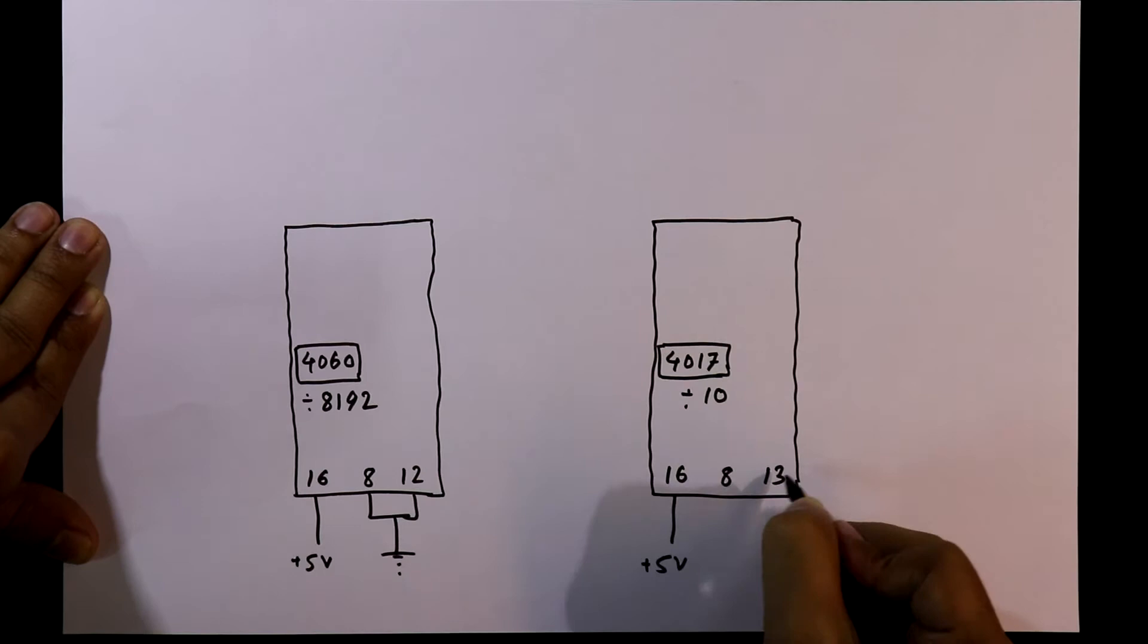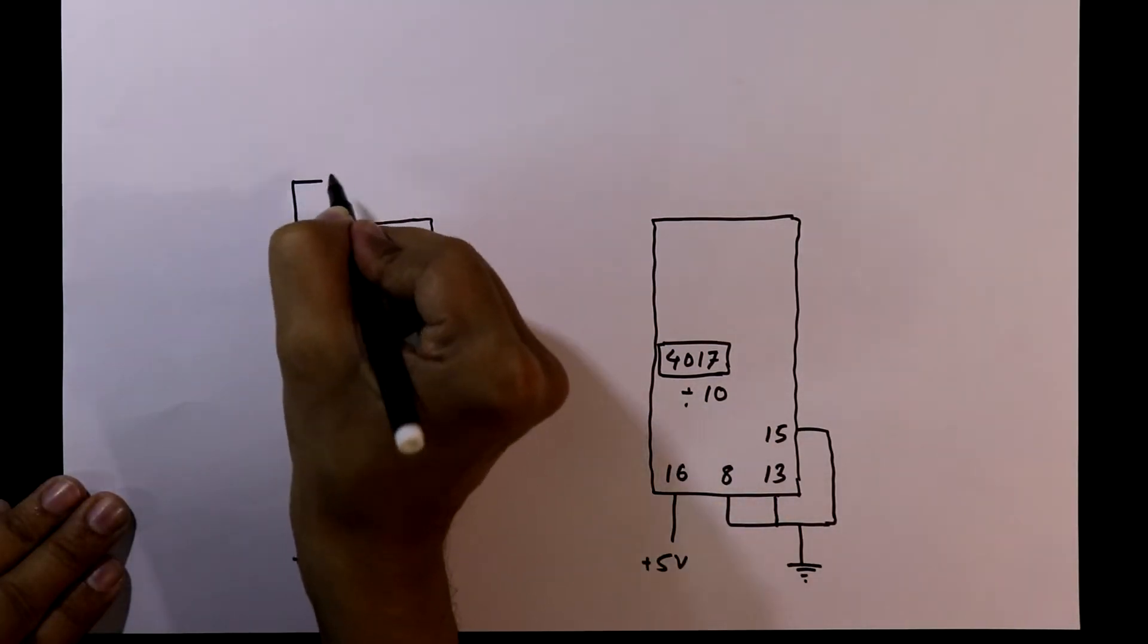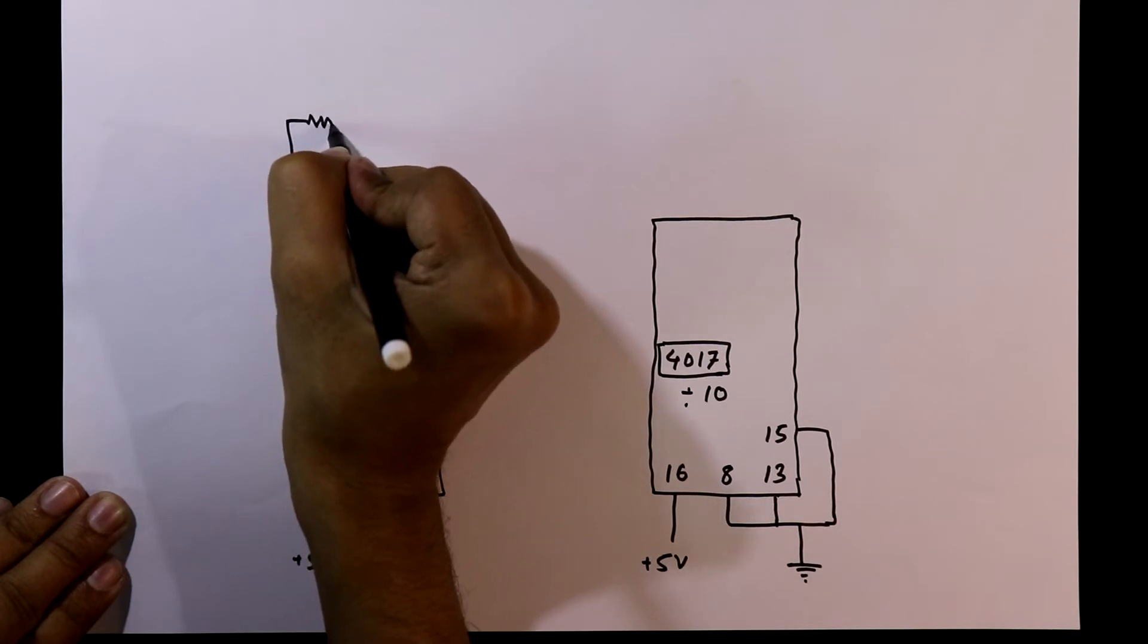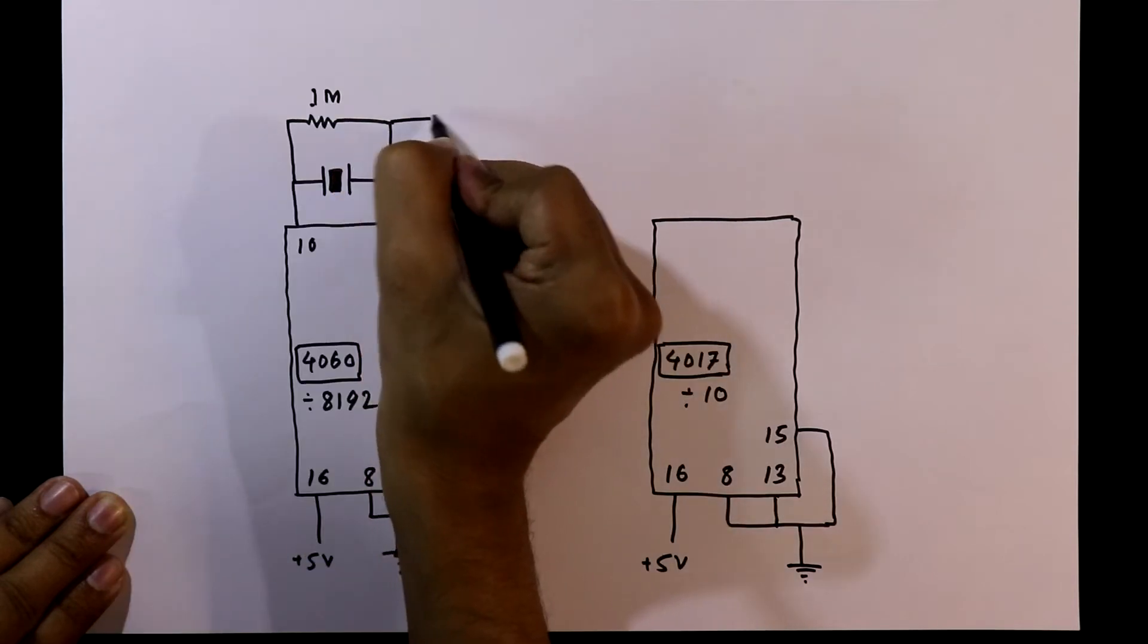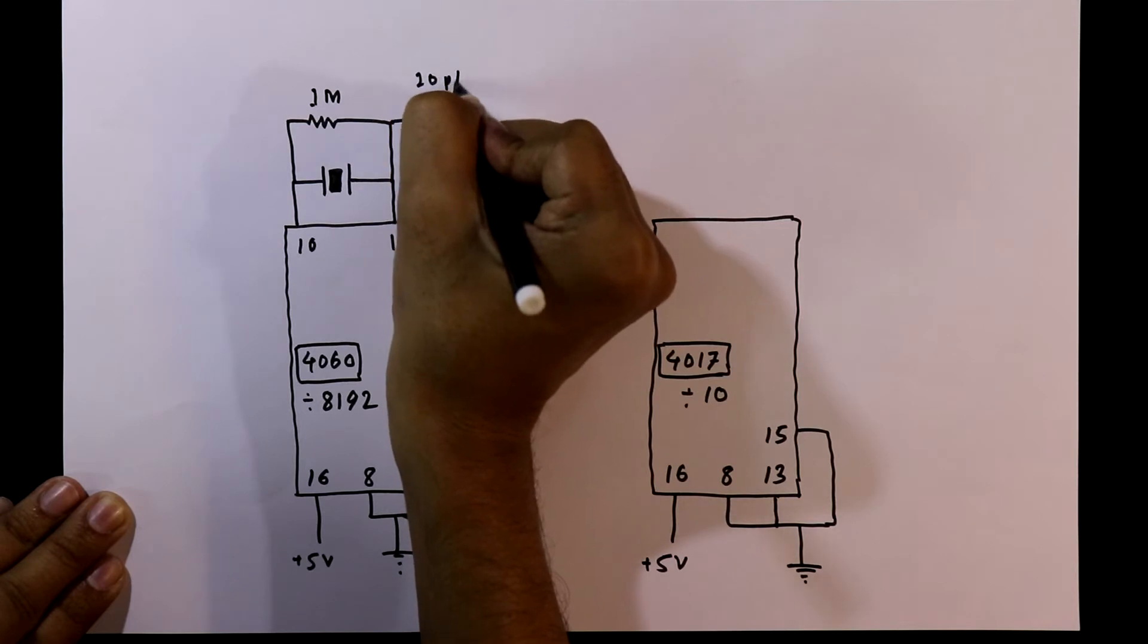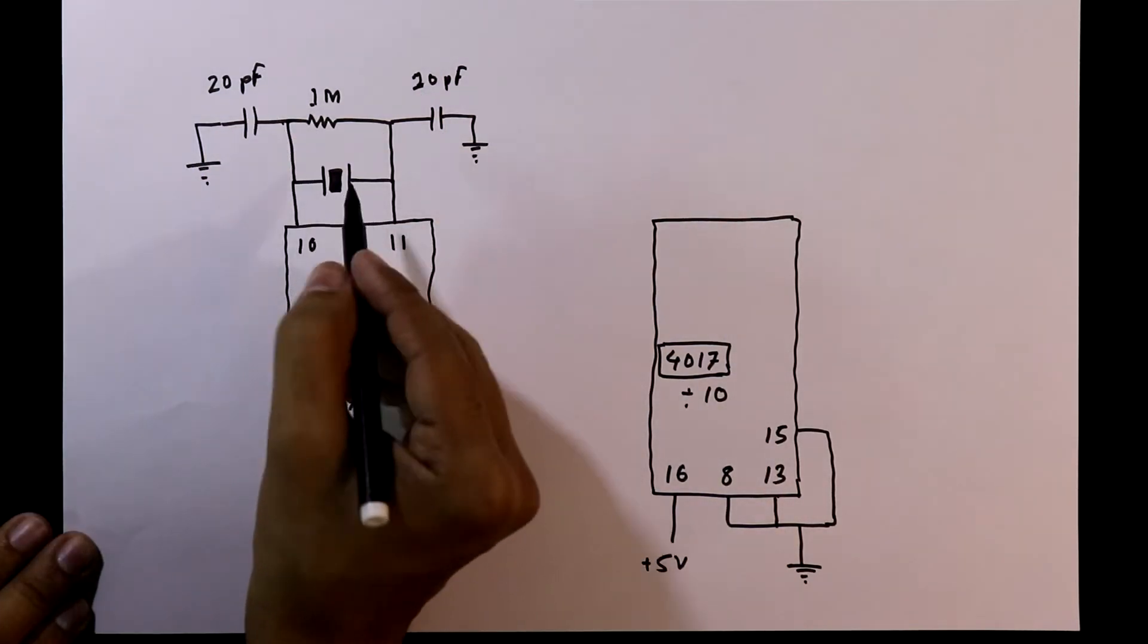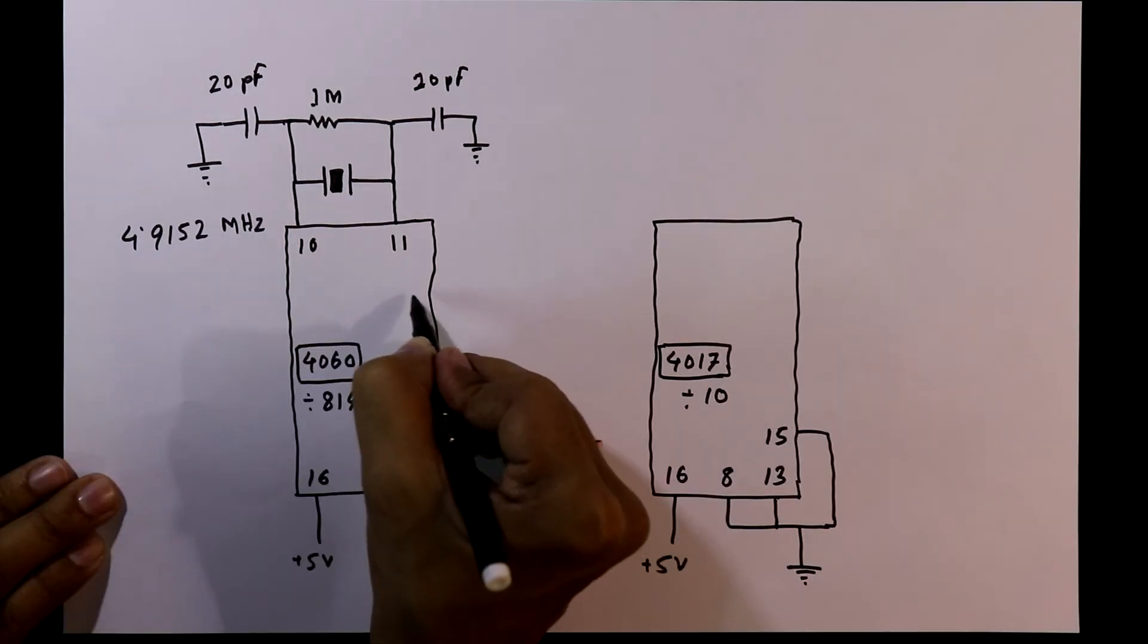Now see pin number 10 and 11, in between these two pins we'll connect the crystal oscillator and parallel with this we'll connect a resistor with value of 1 megaohm. With this pin we'll connect one capacitor with value of 20 picofarad, and with this also we are going to connect this capacitor. The frequency of the crystal oscillator is 4.9152 megahertz.